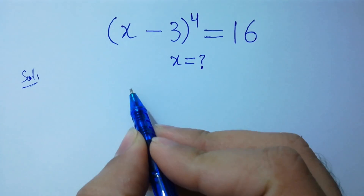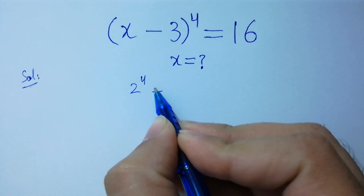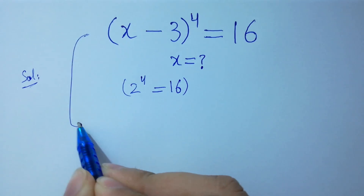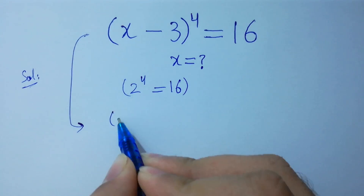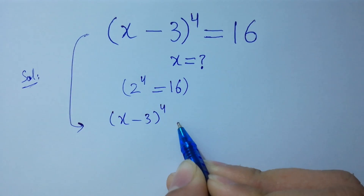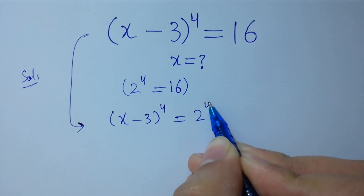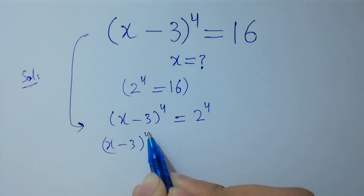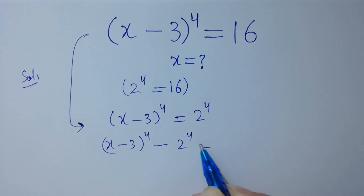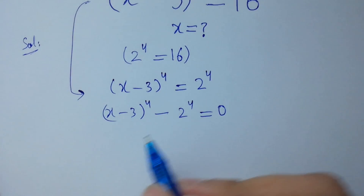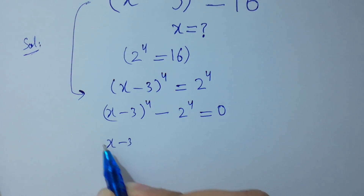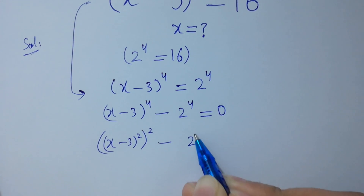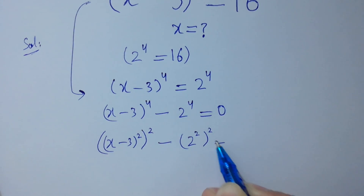Since 2 to the power 4 equals 16, we can write (x minus 3) to the whole power 4 equals 2 to the power 4. Rearranging: (x minus 3)^4 minus 2^4 equals 0, which is the same as [(x minus 3)^2]^2 minus [2^2]^2 equals 0.